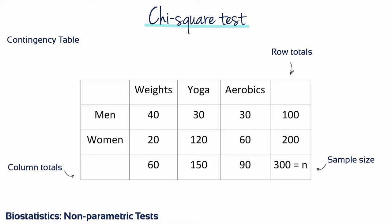In order to calculate the chi-square statistic, we need to find the marginal totals. The marginal totals give the frequencies for each level of one variable, summed over the levels of the second variable. For instance, the marginal total for weights is 40 plus 20, which equals 60. So focusing on exercise type irrespective of sex, 60 people in the sample prefer weights. Similarly, the marginal total for men is 40 plus 30 plus 30, which equals 100. The bottom right-hand corner gives the total sample size, found by summing the row totals or column totals.